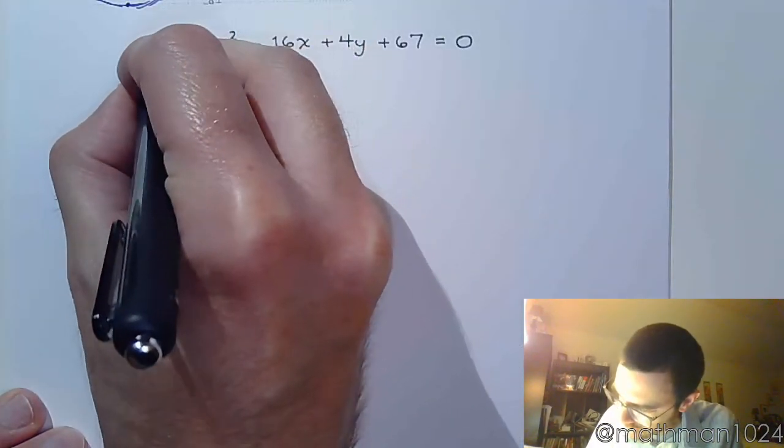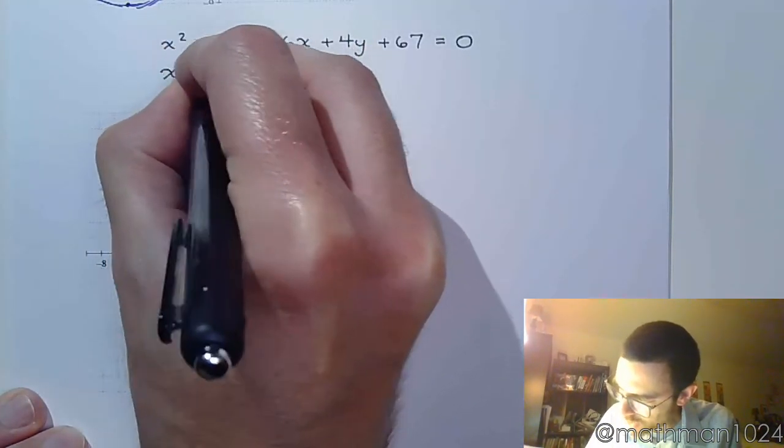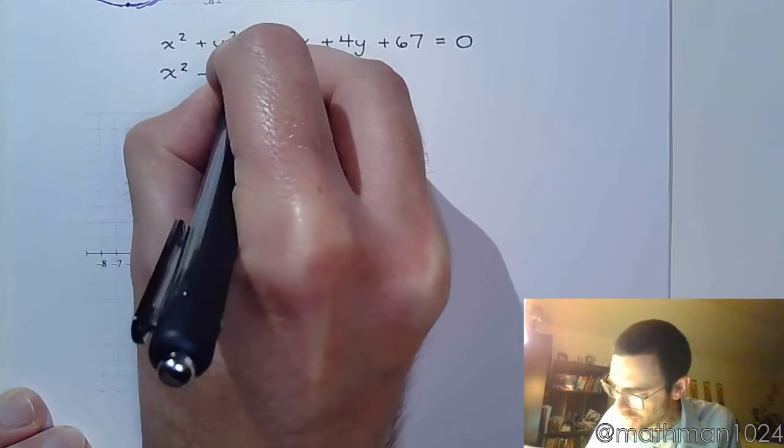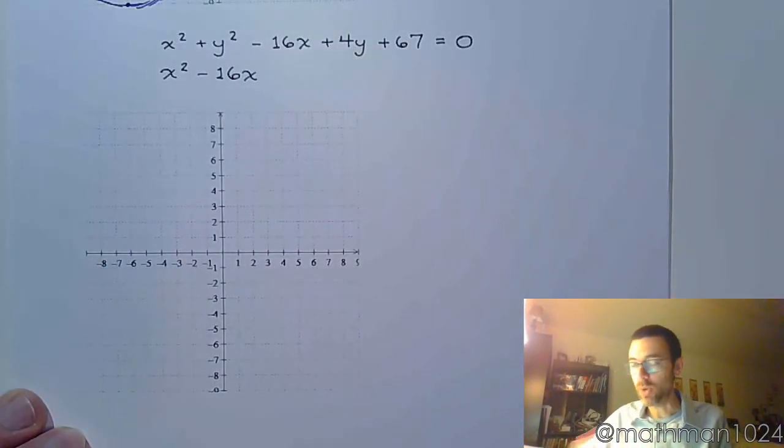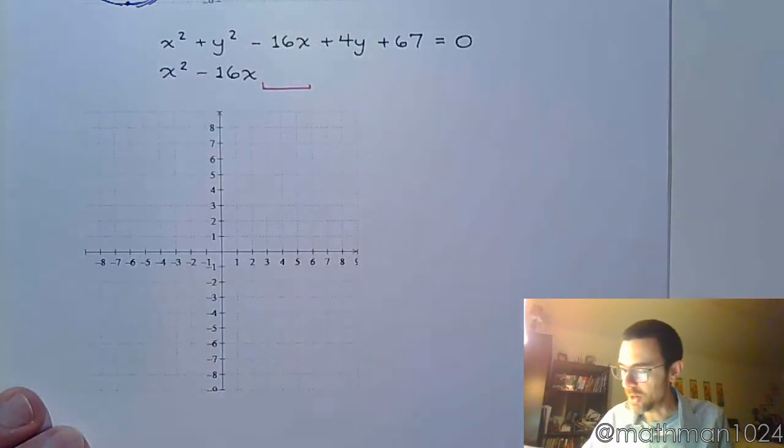So when I rearrange, we get x squared minus 16x. And since we know we're going to complete the square, we're going to put a little gap right here.